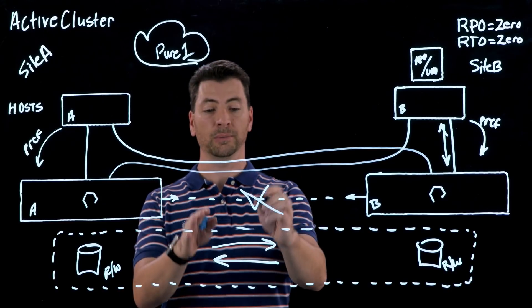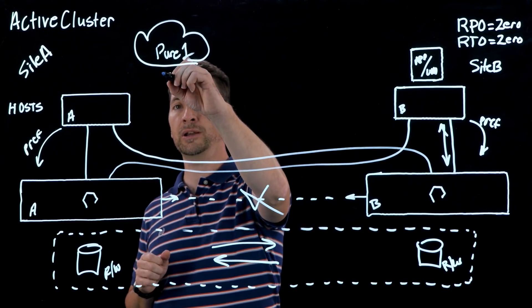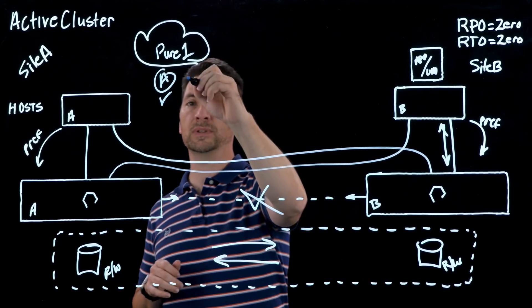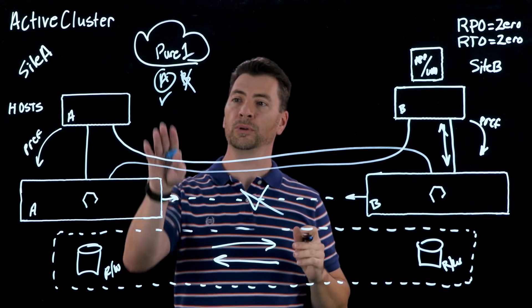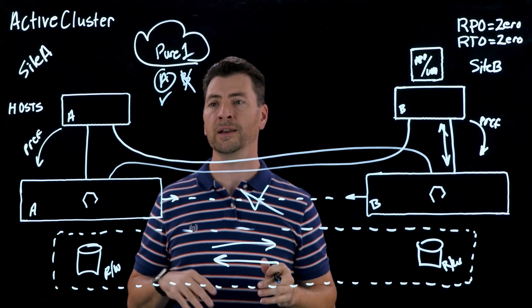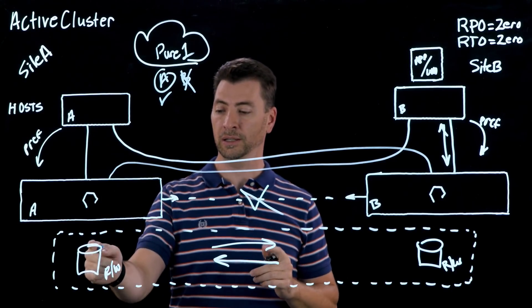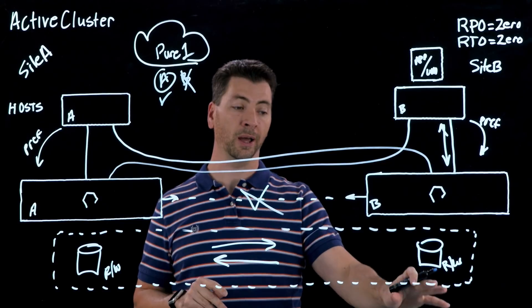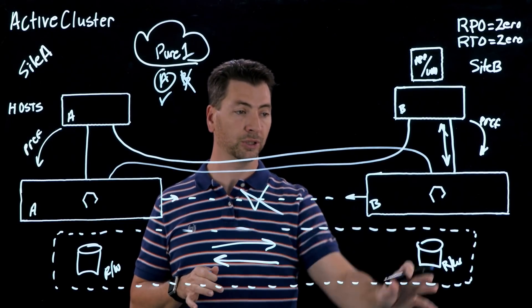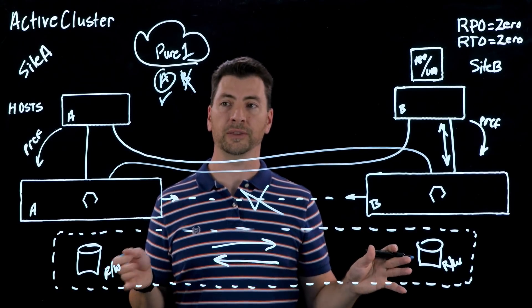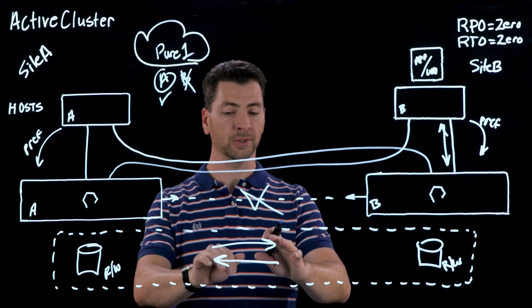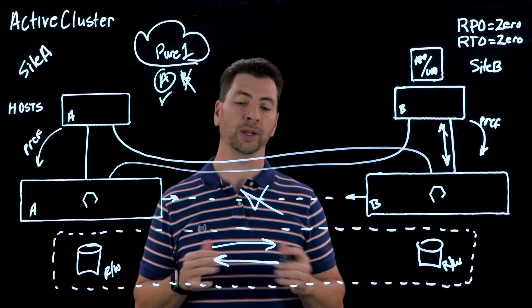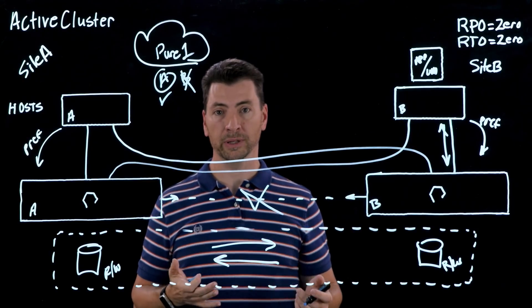Once the interconnect failure happens, both arrays race to the mediator. The first one to get there claims the ability to keep its volumes online; the one that arrives last has to take its volumes offline to prevent split brain. For example, if the link fails and array A gets to the mediator first, it claims the right to keep its volumes online. Array B, arriving second, is told by the Pure1 cloud that array A has already claimed that right, so IO service continues on the copy of the LUN on side A while side B goes offline. Any volumes in a non-stretched pod or local volumes outside of a pod just continue running as if nothing happened — this failover behavior only pertains to stretched pods.